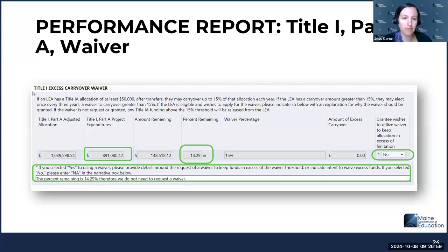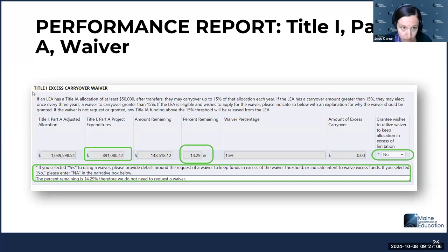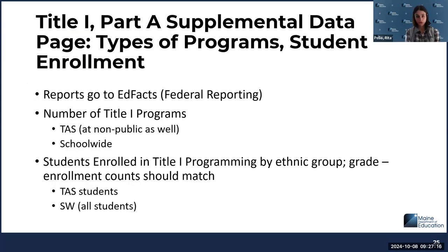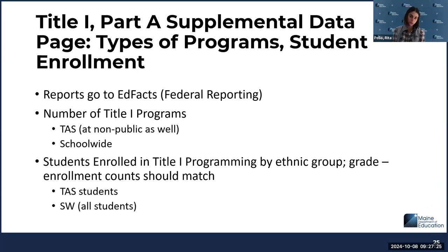It's not the case with Title II, Title III, Title IV, or Title V — it is just Title I, and of course any money transferred into Title I. Expenditures must be reported through 9/30/24 for your district to have a very good grasp of the funding that remains in Title I, to understand whether you are going to request a waiver, don't need to, or don't want to and will be returning funds.